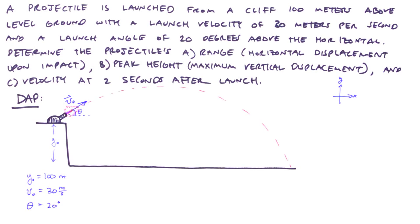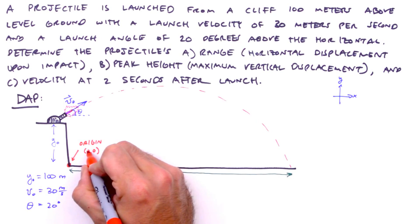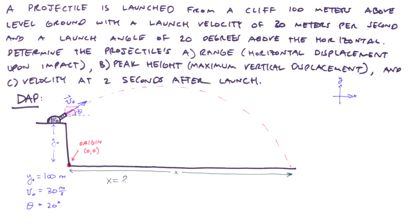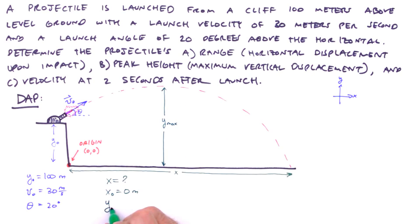So there are some of our knowns. There are a few more that are implied, and we'll address them shortly. The first unknown we're tasked with determining is the projectile's horizontal displacement upon impact, its range. We'll label this x. And by doing so, we've implied the location of the origin, so let's indicate that on our picture. Now it should be clear to see that our projectile's initial position along the x-axis is 0 meters. We'll label the maximum vertical displacement, that is to say our peak height, as y-max.